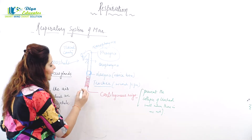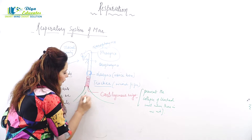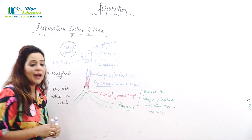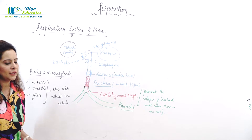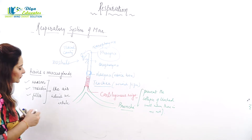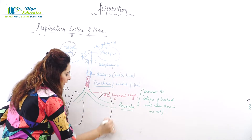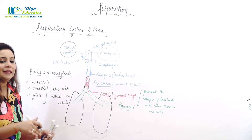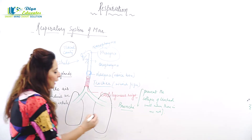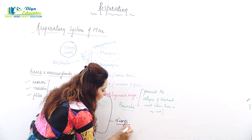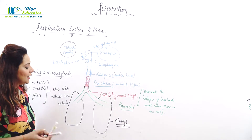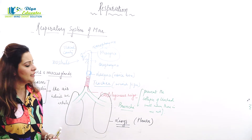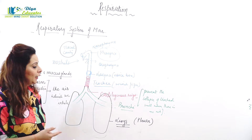The trachea divides into two branches called bronchi. These bronchi enter into two different lungs. When this pipe-like structure enters the lungs, it divides into bronchi. Now, the lungs are our respiratory organ. The outer covering of the lungs is called the pleura — this is very important, as exam questions ask: what is the outer covering of the lungs? It is the pleura.